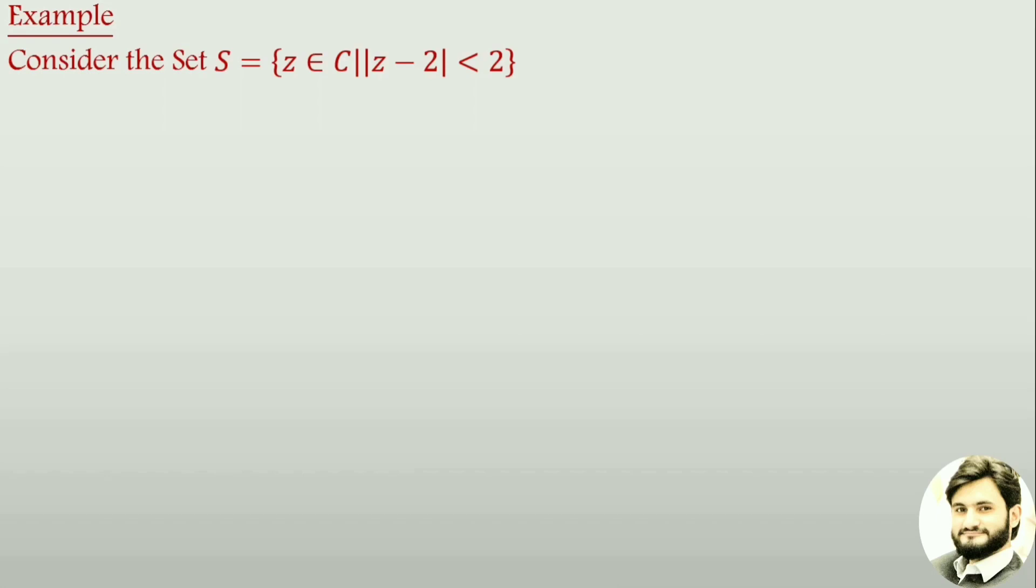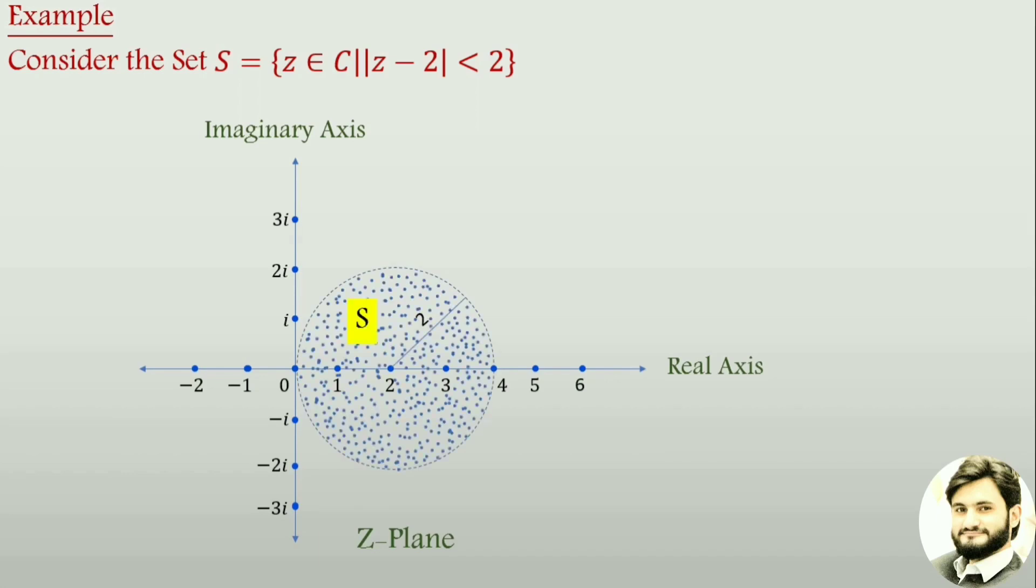Consider the set S = {z ∈ C | |z - 2| < 2}, which contains all those complex numbers whose distance from the point 2 is less than 2. This is the real axis and this is the imaginary axis of the Z plane, and we have set S with all the elements where if the distance is from 2 the answer is less than 2, and the boundary is not included.